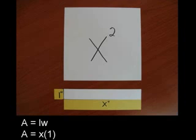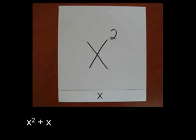Now let's say we want to add this rectangle to it. First, we need to determine its area. As we can see, its width is 1 inch and its length is x inches. Area equals length times width, so the area of this rectangle is x. And now we have a new quadratic expression: x squared plus x.